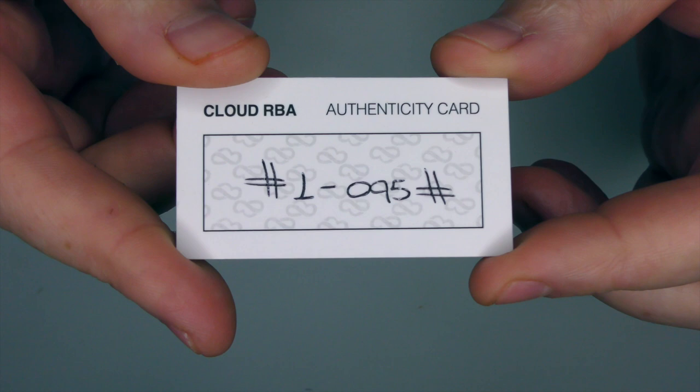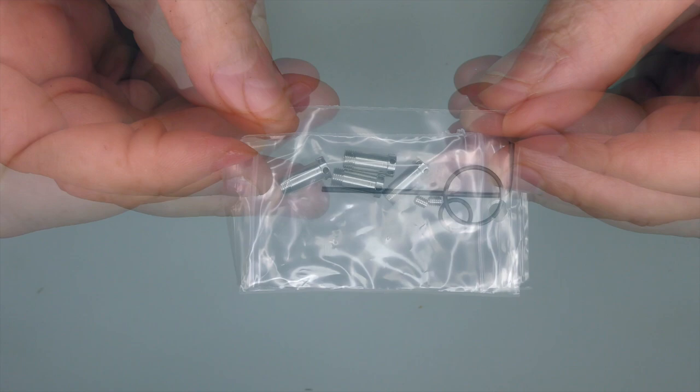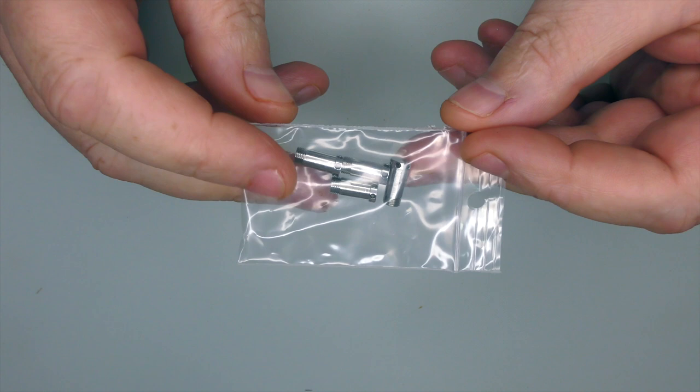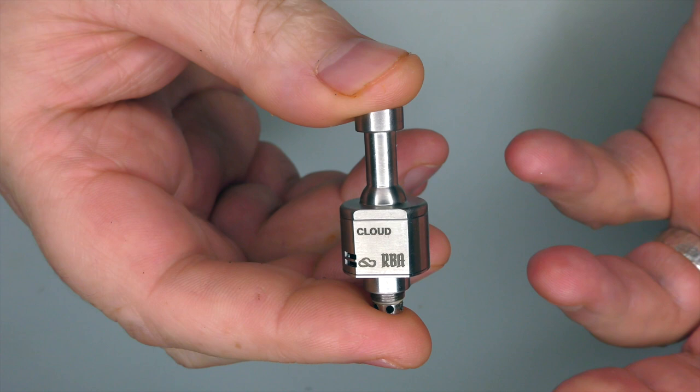Open up your little box and you'll find one bridge, one authenticity card with your serial number that'll match the bottom of the ATTI. An Allen key, post screws, and a couple of O-rings. And last but not least you're also going to get airpins - five airpins in total. They go from 1mm, 1.5mm, 2mm, 3mm and 4mm.